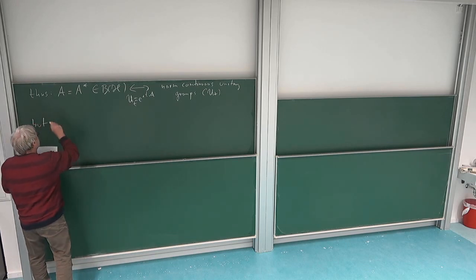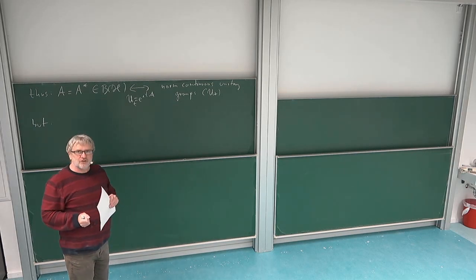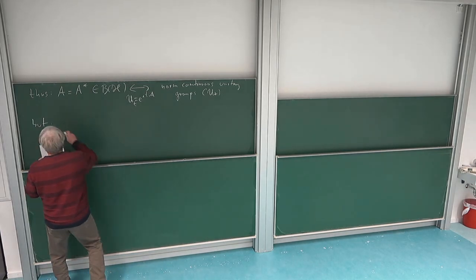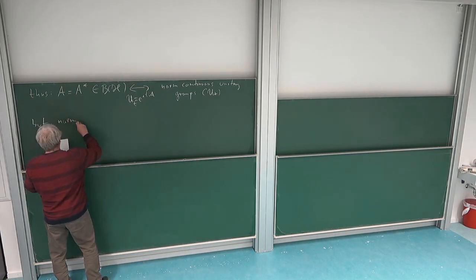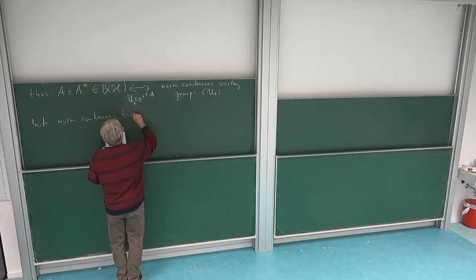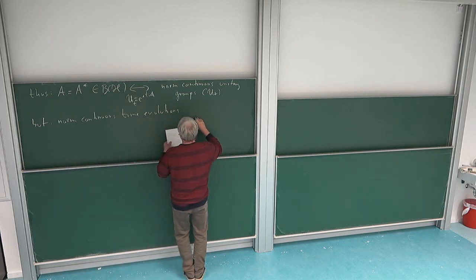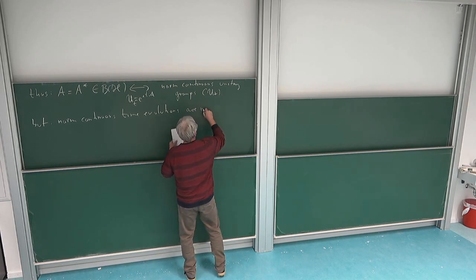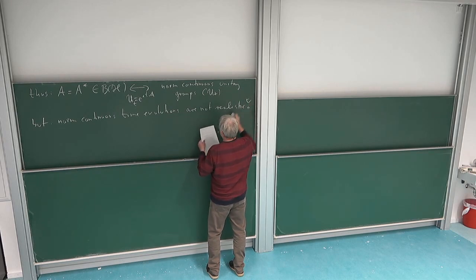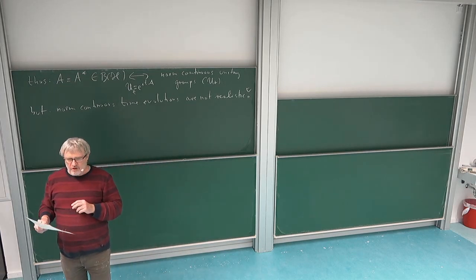This setting is nice, also mathematically nice, but it is somehow too restrictive. For this setting we wouldn't need unbounded operators, but we have to go further. Norm-continuous time evolutions or bounded Hamiltonians are not realistic in many situations, so one needs an extension — a generalization to unbounded operators.